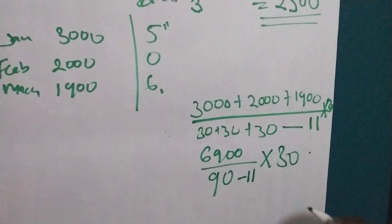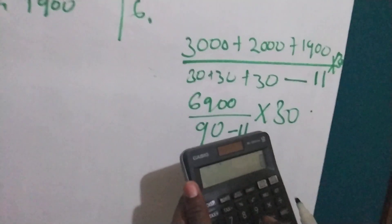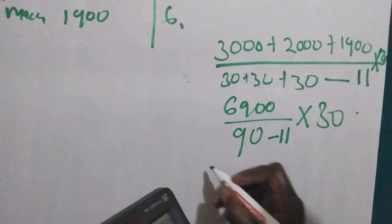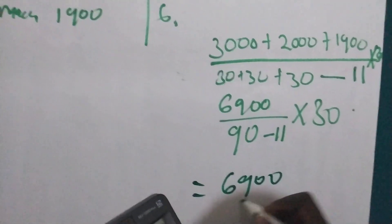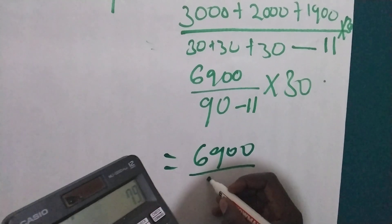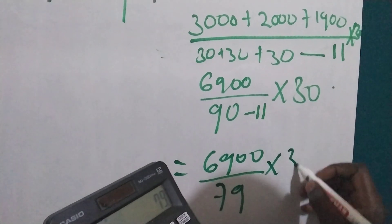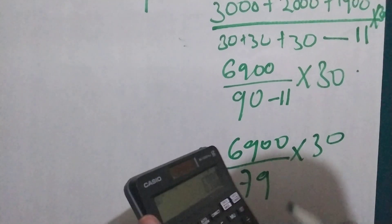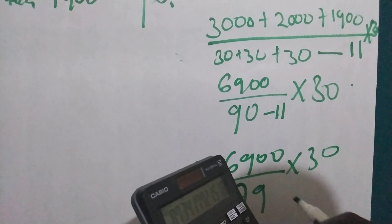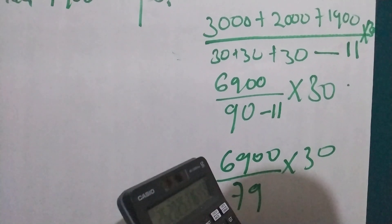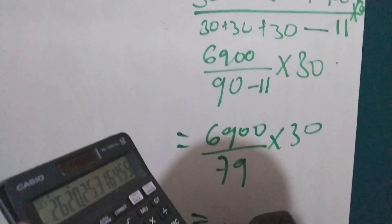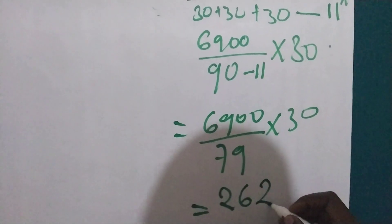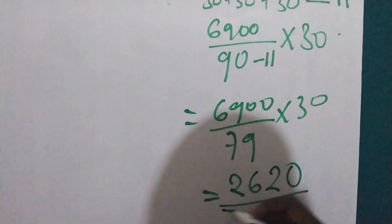So 90 minus 11 equals 79. Then 6900 divided by 79, times 30. Our average monthly consumption is 2620 in a month.